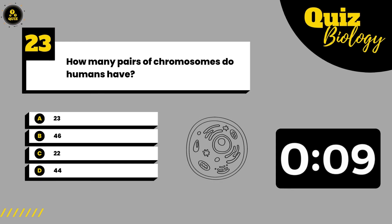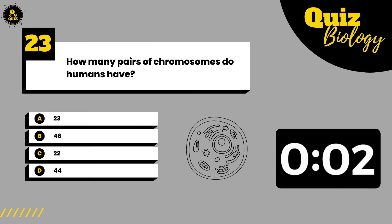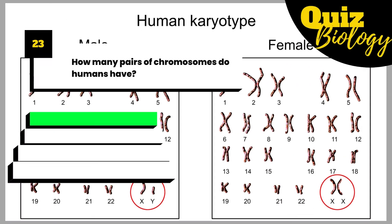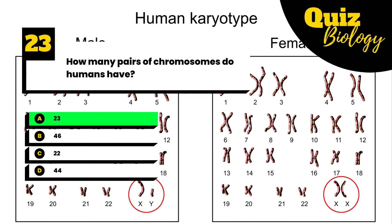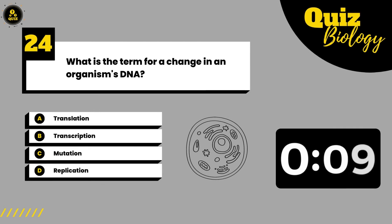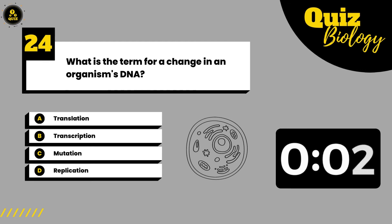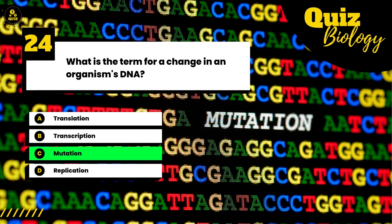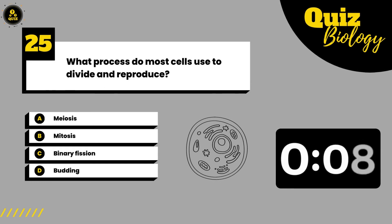How many pairs of chromosomes do humans have? What is the term for a change in an organism's DNA? What process do most cells use to divide and reproduce?